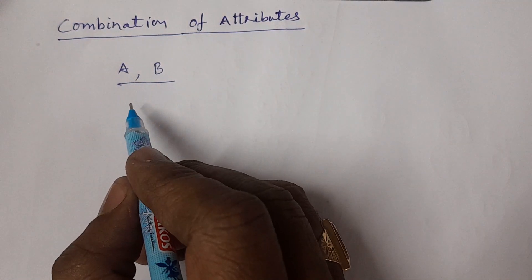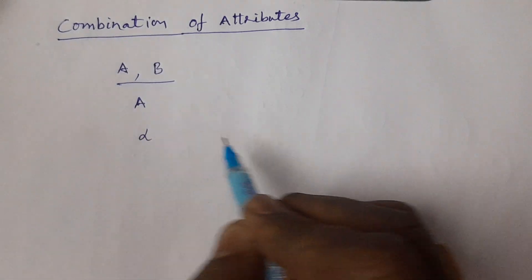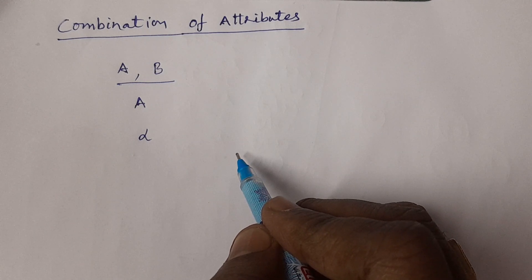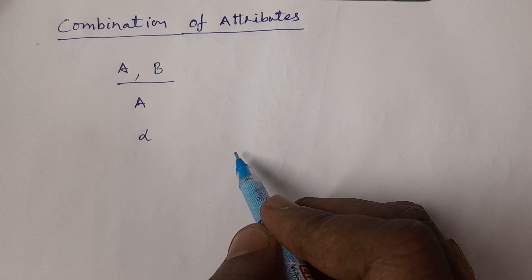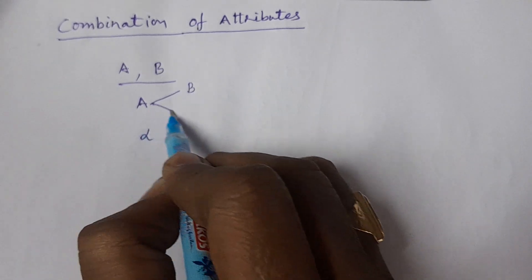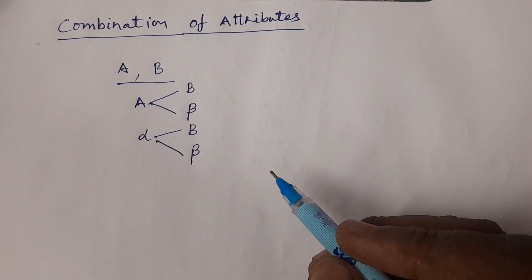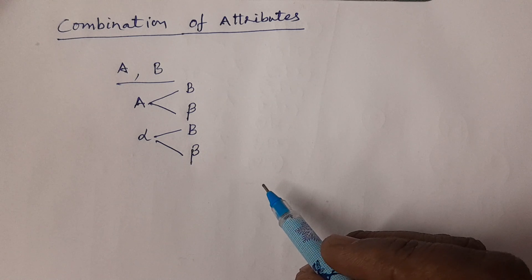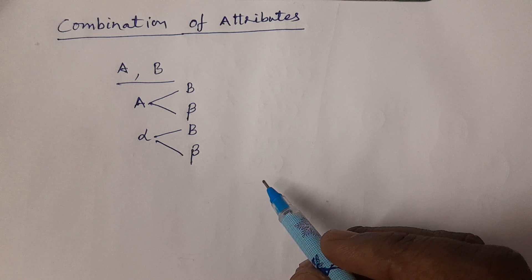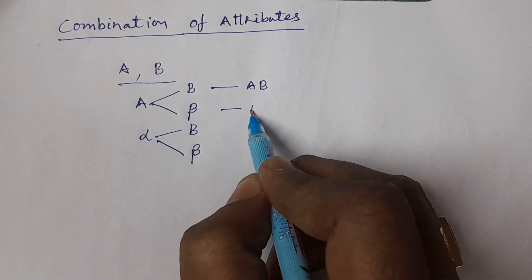The positive class and negative class of attribute A are A and alpha. If you write or construct a tree with the positive and negative class of attribute B — for example, you consider the combination of A with B, and A with beta. From this, A B is the combination of attributes and A-beta is the second one.